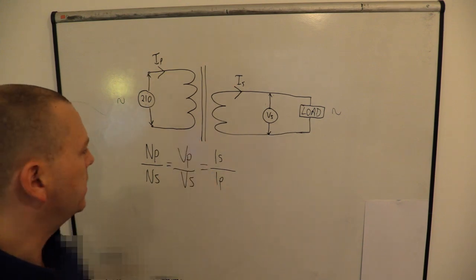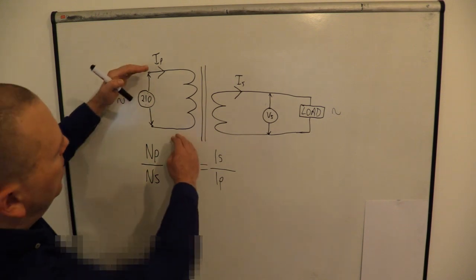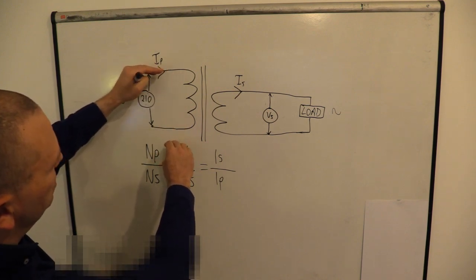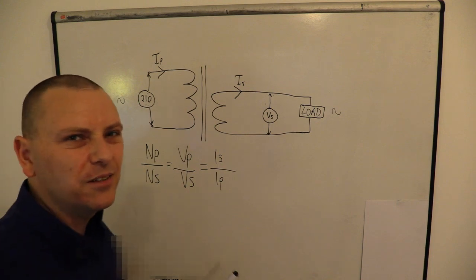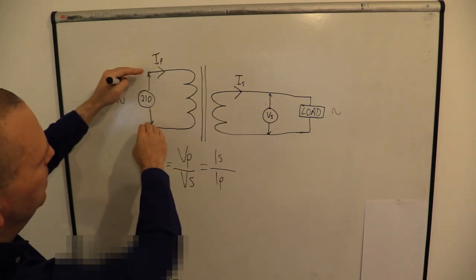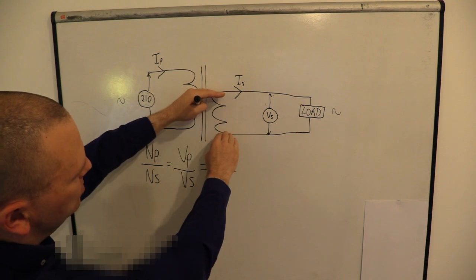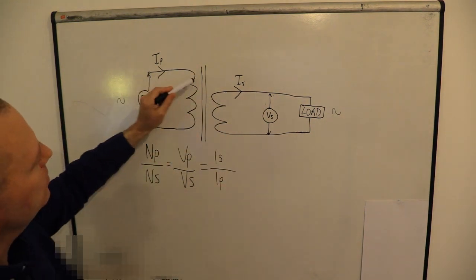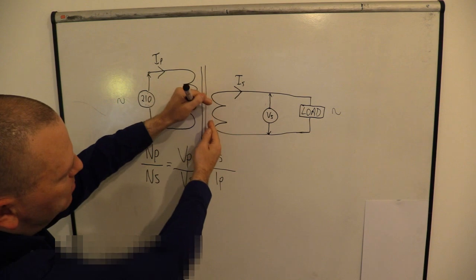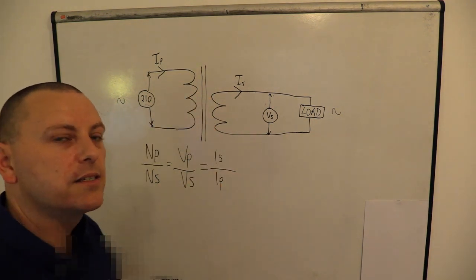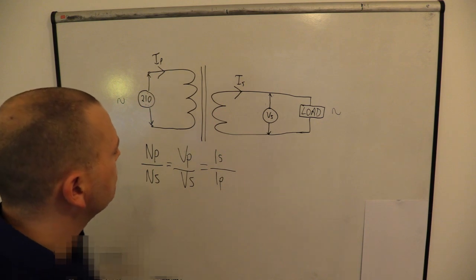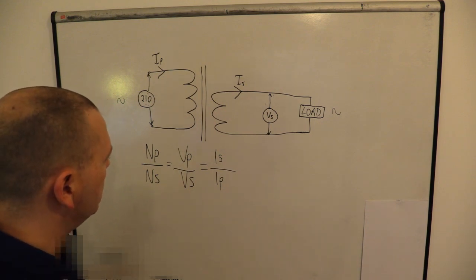The voltage is stepping down because of the turn relationships. Think of it as a physical thing: on the primary we've got a big distance between the positive and negative side — that's a big potential difference, big voltage. Coming down to the secondary, it's a small difference, smaller voltage. Then think about the current: on the primary it has lots of space to spread out, so it's less intense. But on the secondary it's compressed into a small space, so it's more intense. So the voltage comes down but the intensity of the current increases. That, in a nutshell, is how transformers work.